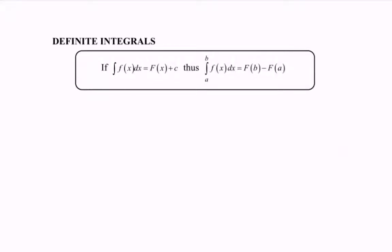Hello everyone, today I'm going to discuss the topic of integration. Here we have the definite integral. Given the situation, we integrate the function f(x) with respect to x and we will have the capital F(x), which is the antiderivative, plus the constant C. For the definite integral, we add the limits from a to b, which gives us capital F(b) minus capital F(a).